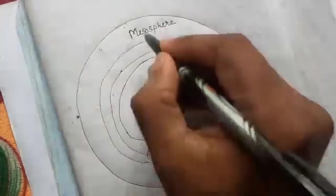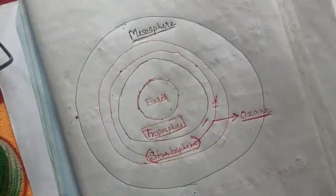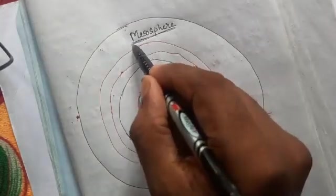The next is mesosphere. This is the third sphere of the atmosphere - first is troposphere, then stratosphere, and then mesosphere.